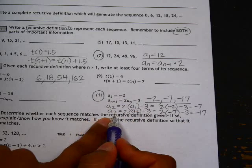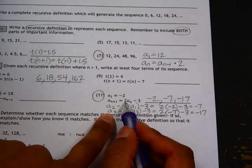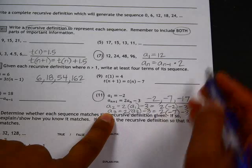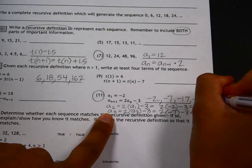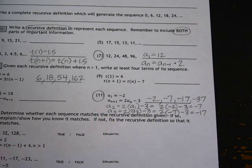And for the fourth term, I'm going to take 2 times the previous term, so that would be negative 34, and then subtract 3, giving us negative 37.